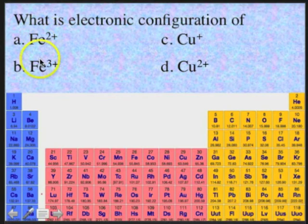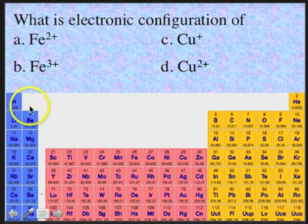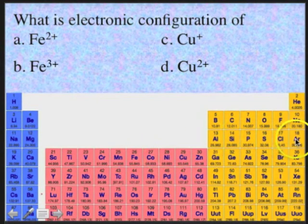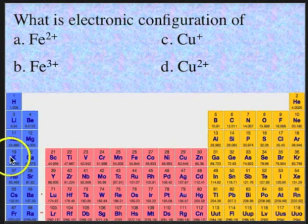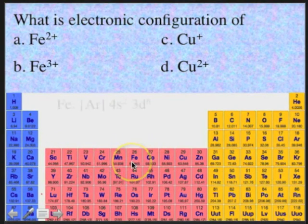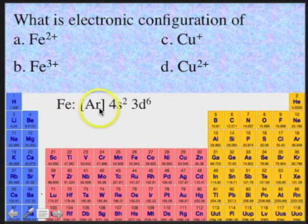For iron, we write out the electronic configuration. Iron is in the 3d block, and the preceding noble gas is argon. So that's the argon core, then 4s2, 3d1, 2, 3, 4, 5, 6 — so argon core, 4s2, 3d6.